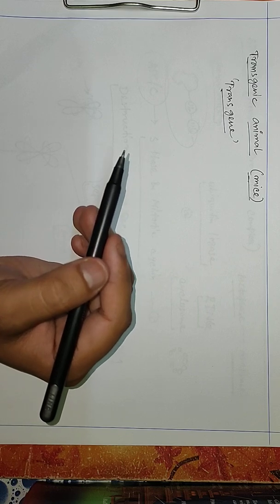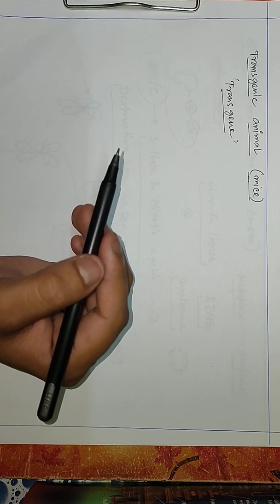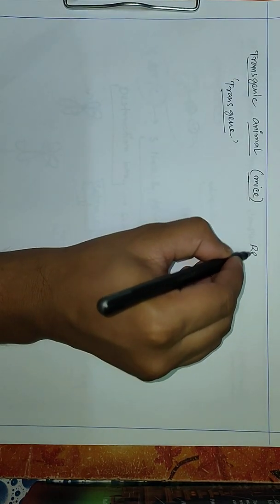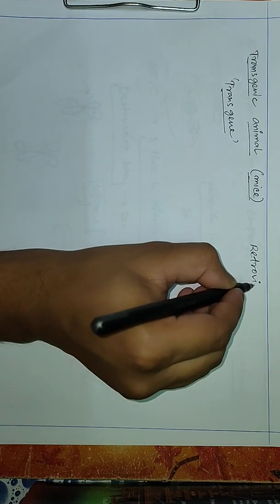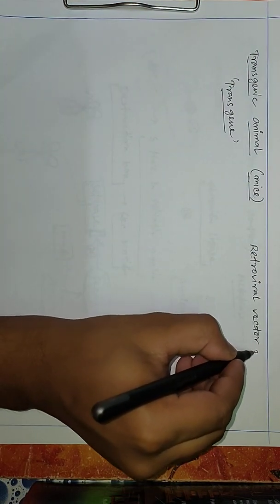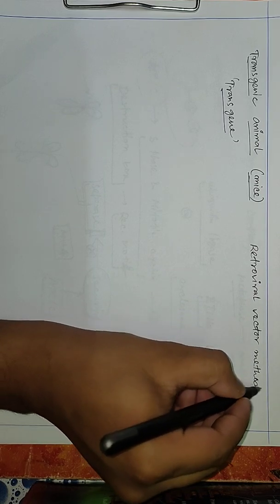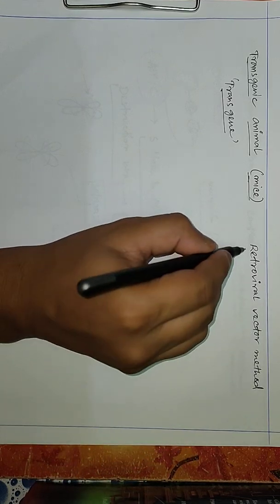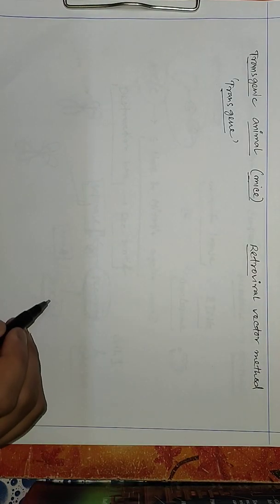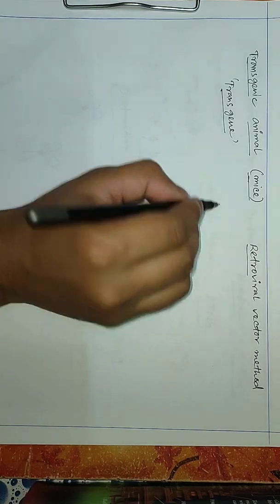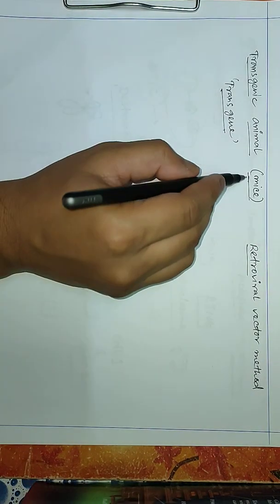Then we see the phenotypic changes. This is the transgenic animal concept. There are many methods, and in this video we will discuss one method which is the retroviral vector method. We will use a virus, a retrovirus to be precise, to introduce a transgene into a mouse.